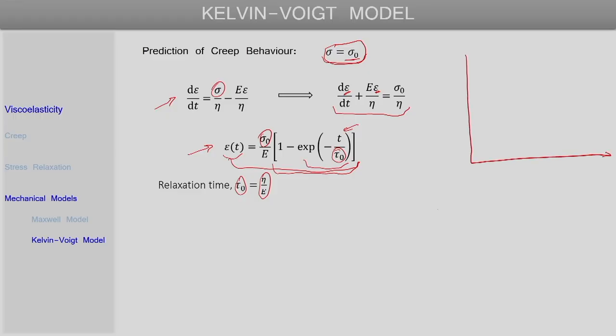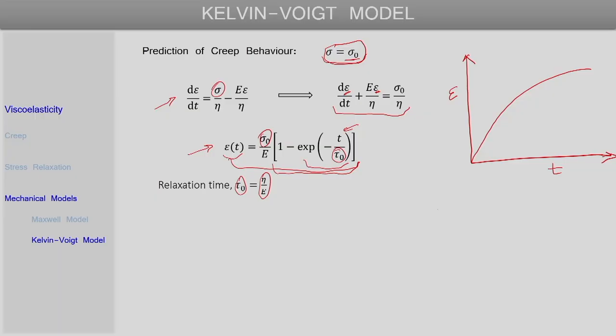If we draw the change of strain with time in a creep experiment, the Kelvin-Voigt model predicts a behavior where at least the strain is not linearly increasing with time. In the initial part the strain increases rapidly with time, but as time progresses the rate at which the strain is increasing slows down and ultimately tries to reach a constant value. So the Kelvin-Voigt model gives a better prediction of creep behavior of viscoelastic polymers than the Maxwell model.